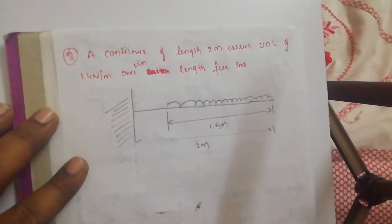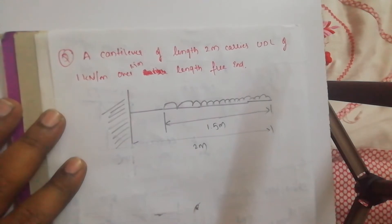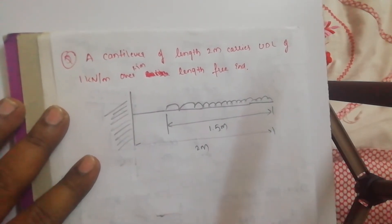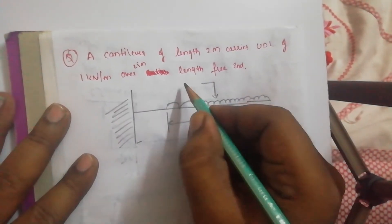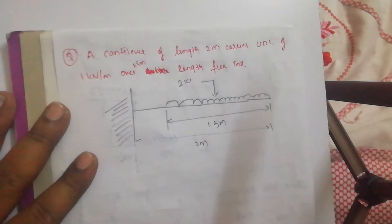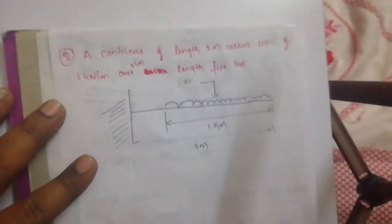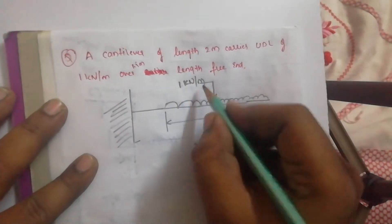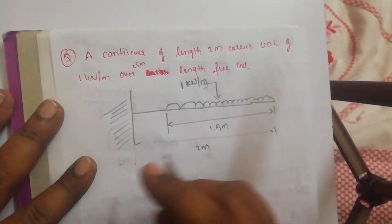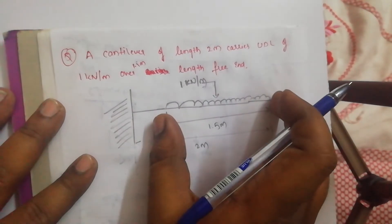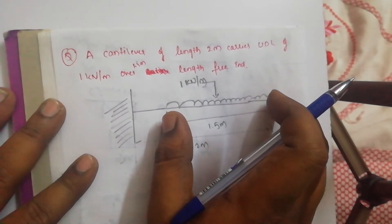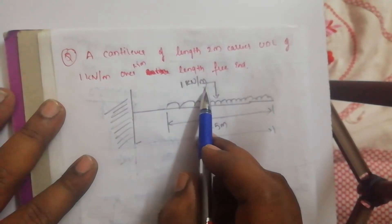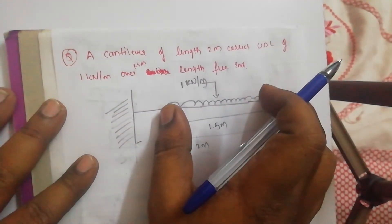Welcome to the next lecture of mechanics of materials. We were discussing cantilever beams, and in the last lecture we saw a problem on cantilever beam with point loads. In this lecture we are going to discuss cantilever beam with UDL load. The UDL is given as 1 kilo Newton per meter. The unit of UDL is always given in Newton per meter, and you multiply it with the length to which it has been applied to obtain the total force. For example, 1 kN/m multiplied by 1.5 gives you the total load due to this UDL.